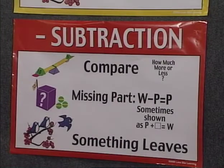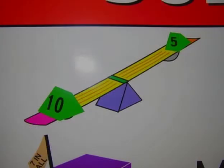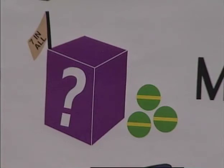The subtraction poster shows comparison subtraction with scales. You are comparing 10 to 5 — how much more is 10 than 5? Next, you are looking for the missing part: you have three balls outside the box, and the flag says you have seven balls in all. How many balls are under the box?